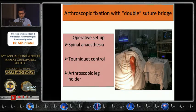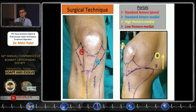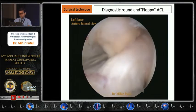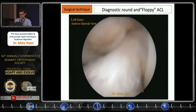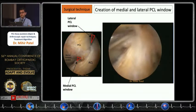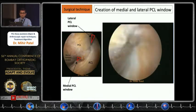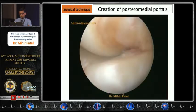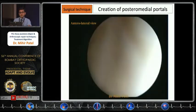For the arthroscopic double suture bridge technique, I use spinal anesthesia with a high thigh tourniquet. I use the standard anterolateral portal and standard anteromedial portal to work anteriorly, and an anteromedial incision for drilling tunnels. Two posterior portals are used: a high posteromedial portal about two centimeters above the joint line, and a low anteromedial portal through which a 5 mm cannula is placed. At diagnostic arthroscopy, the ACL is found to be floppy because the tibia has sagged posteriorly due to the incompetent PCL.